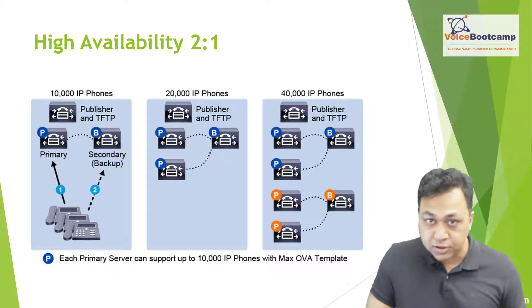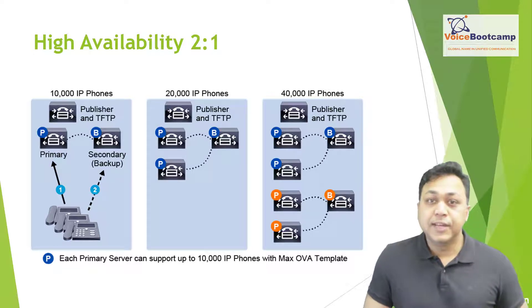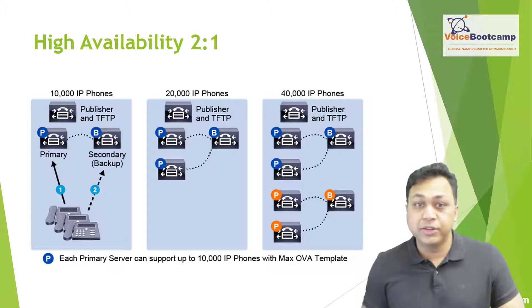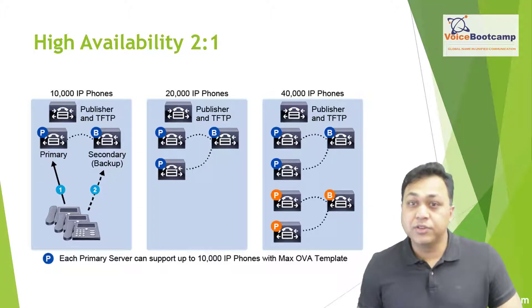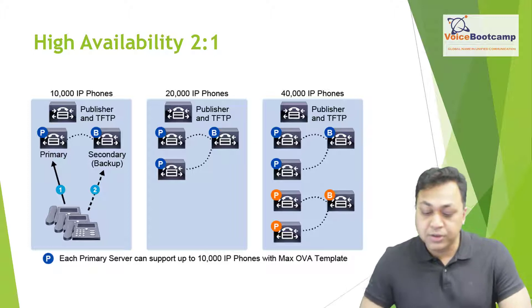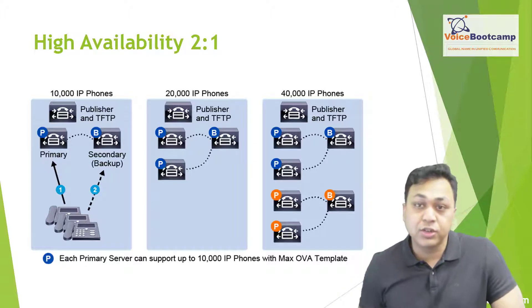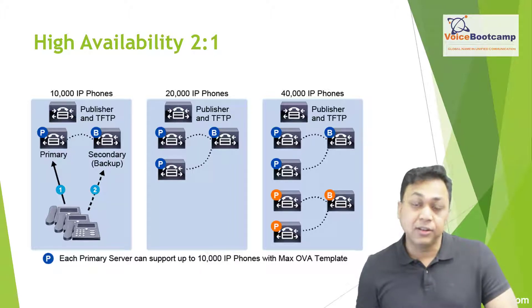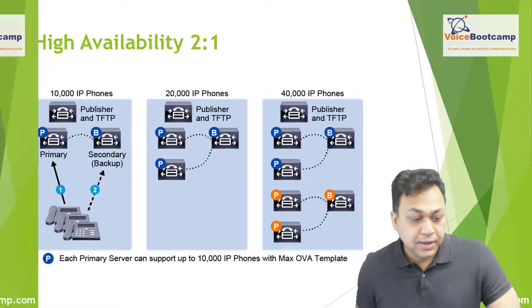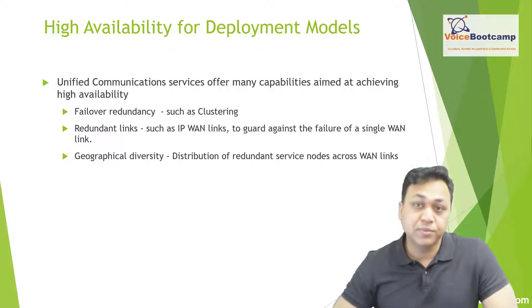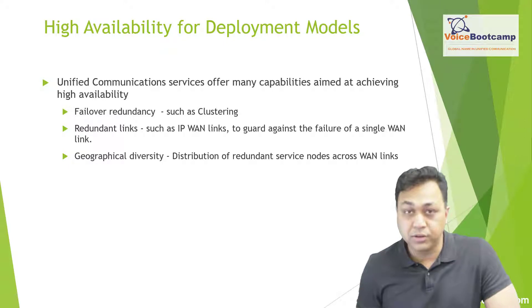There are backup select options depending on your design. For example, if you have 10,000 phones registering to one primary server and another 10,000 phones registering to another primary server, if either of those servers crashes there will be a problem. As long as one service fails or is in the process of upgrading, it should fail over to the secondary server, which should be able to handle the full load from the primary.